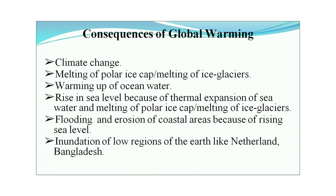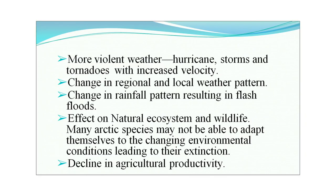Consequences of global warming include: climate change, melting of polar ice caps and glaciers, warming of ocean water, rise in sea level due to thermal expansion and ice melt, flooding and erosion of coastal areas, inundation of low-lying regions like the Netherlands and Bangladesh, more violent weather conditions such as hurricanes, storms, and tornadoes, changes in regional and local weather patterns, changes in rainfall patterns, effects on natural ecosystems and wildlife — with many Arctic species unable to adapt — and decline in agricultural production.